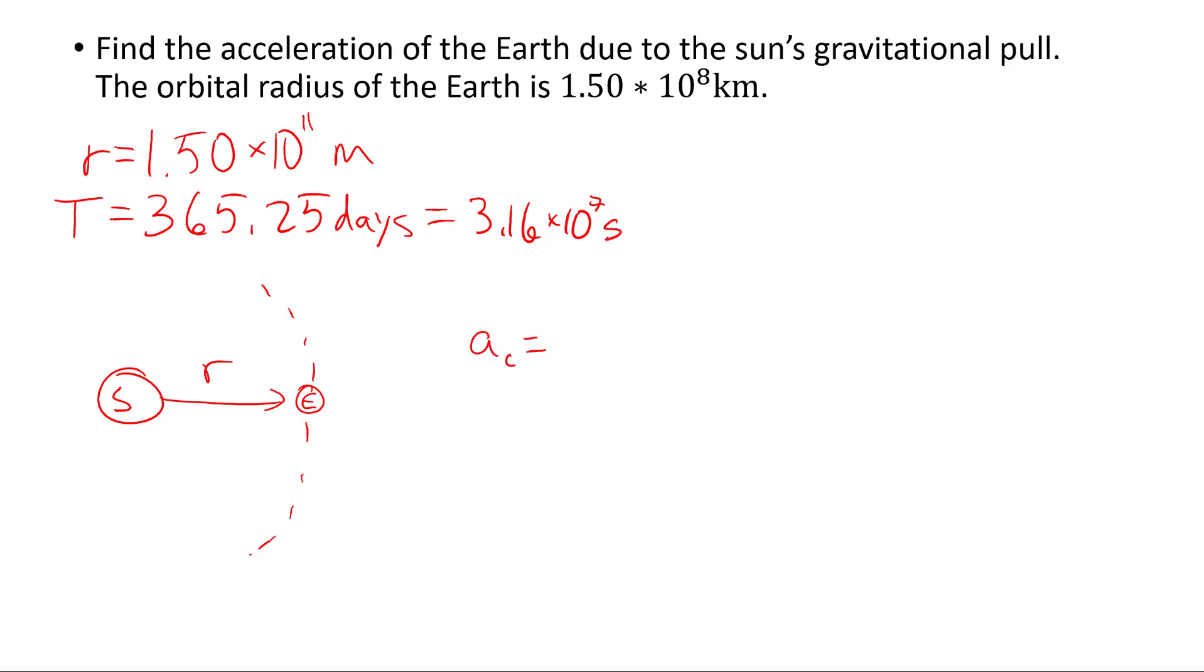Using my centripetal acceleration equation, 4 pi squared r over big T squared, I can then solve for the acceleration of the Earth towards the sun. 4 pi squared times 1.50 times 10 to the 11 meters over 3.16 times 10 to the 7 seconds all squared. Put that into a calculator. I get 0.00991 meters per second squared, or 9.91 millimeters per second squared.